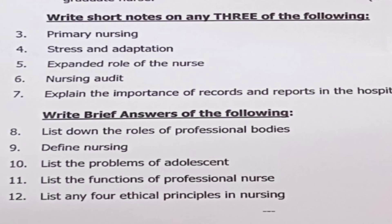Moving on to brief answers — that is 2-mark questions. They will give 5 questions, so 5 into 2 equals 10 marks, and you have to answer all 5. There is no choice in brief answers. Question 8: List down the roles of professional bodies. Question 9: Define nursing. Question 10: List the problems of adolescent. Question 11: List the functions of a professional nurse. Question 12: List any 4 ethical principles in nursing.